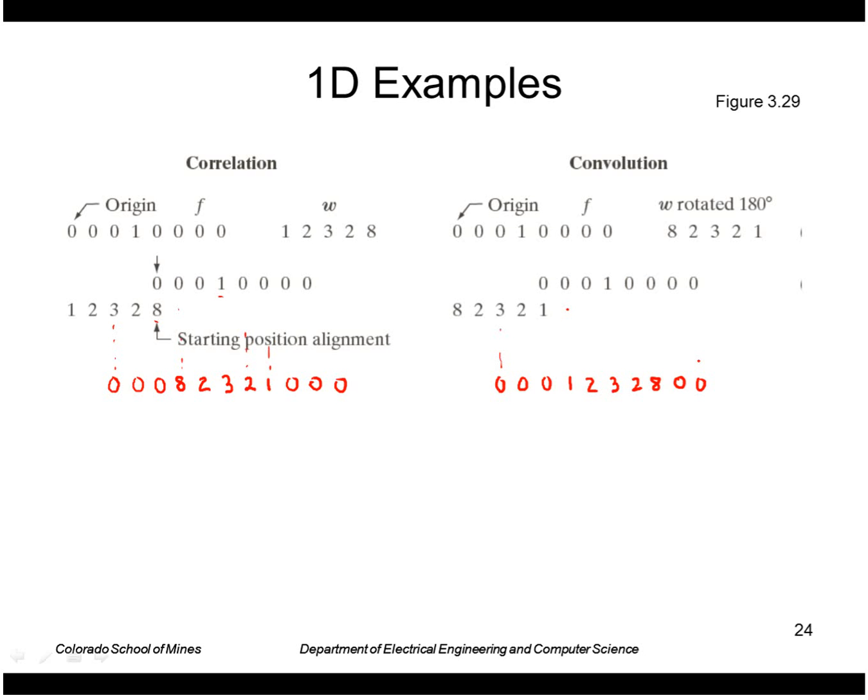Just to note, correlating a mask with an impulse gives you the mask back but flipped. Convolving a mask with an impulse gets you the mask back exactly.